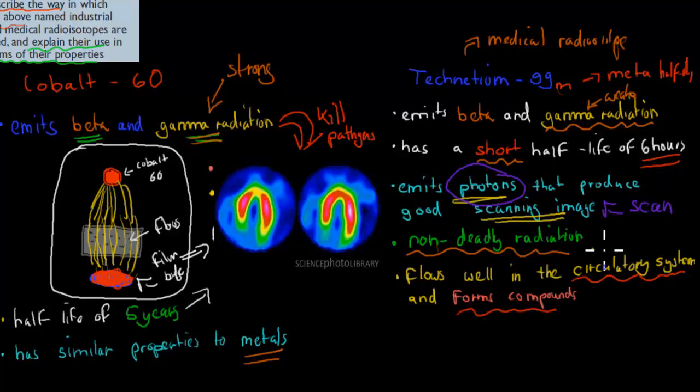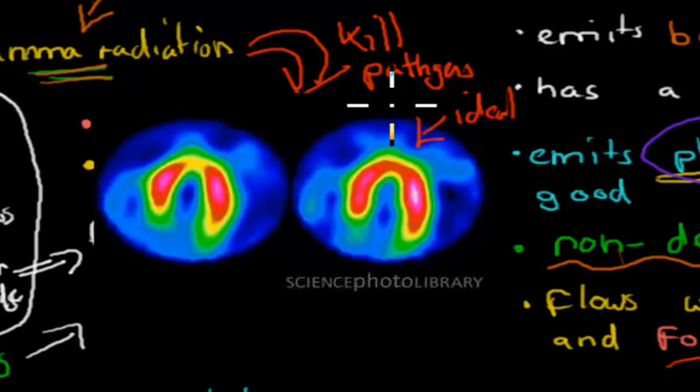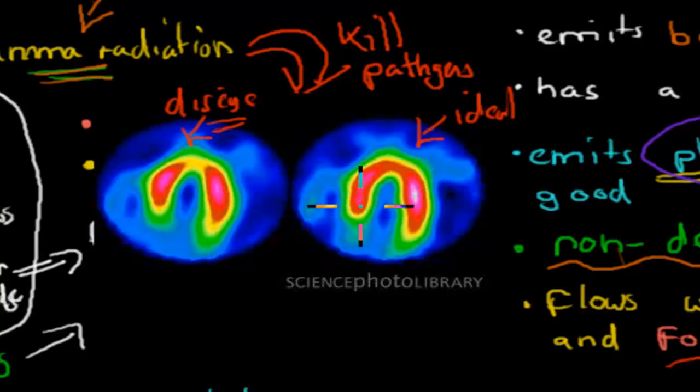It flows well in the circulatory system and forms compounds. This allows us to check our blood and bloodstream. Because it forms compounds in different organs—for example, the heart—we can have it there for a couple of hours and see if everything is shaped well. There are two pictures here: this might be ideal, and this is a diseased scan. We can see this shape because it's formed compounds in the heart itself. But there might be a tumor here, so it can't form compounds right there because space is taken away. That shows on the scanner as not ideal.